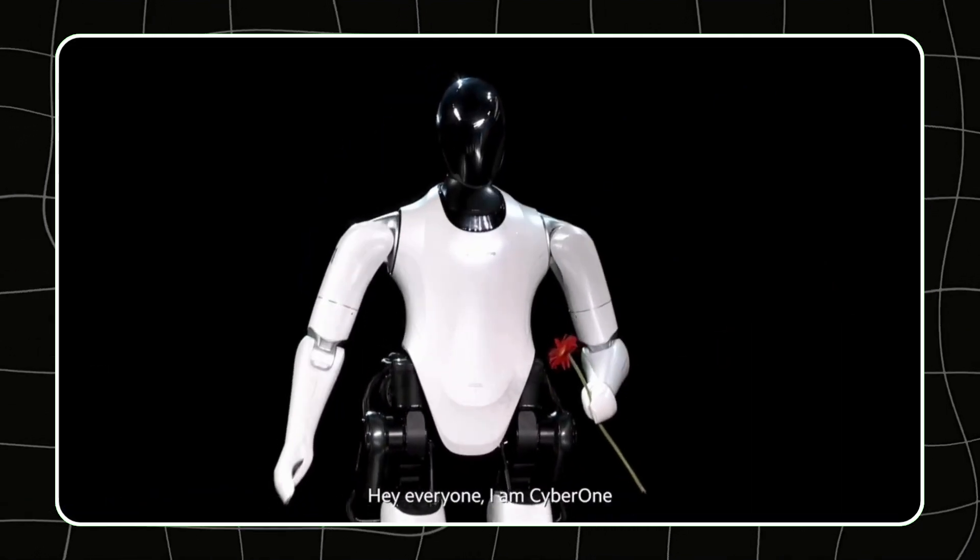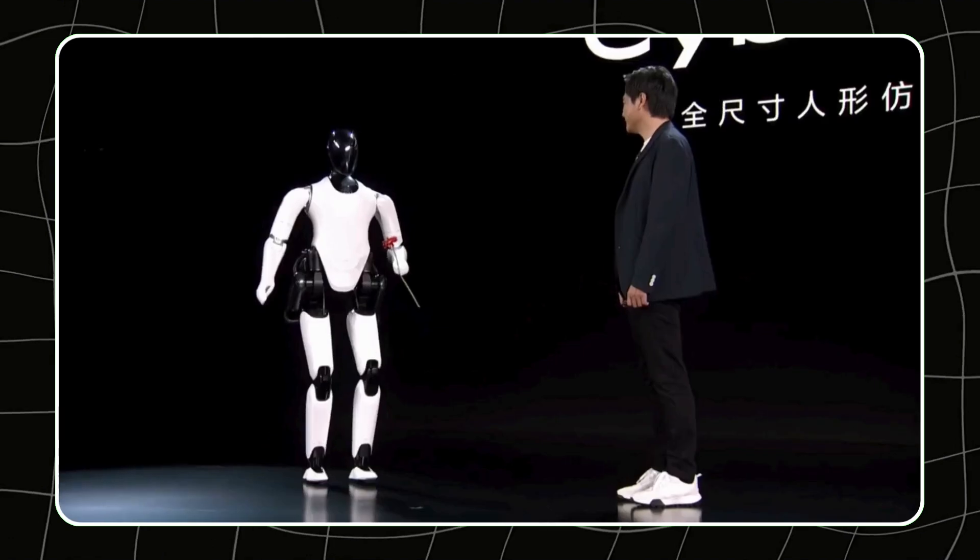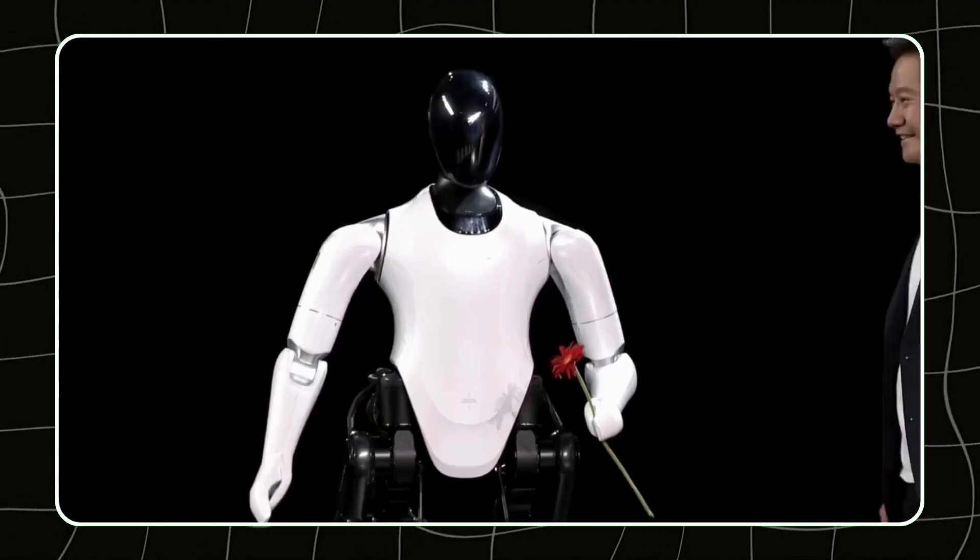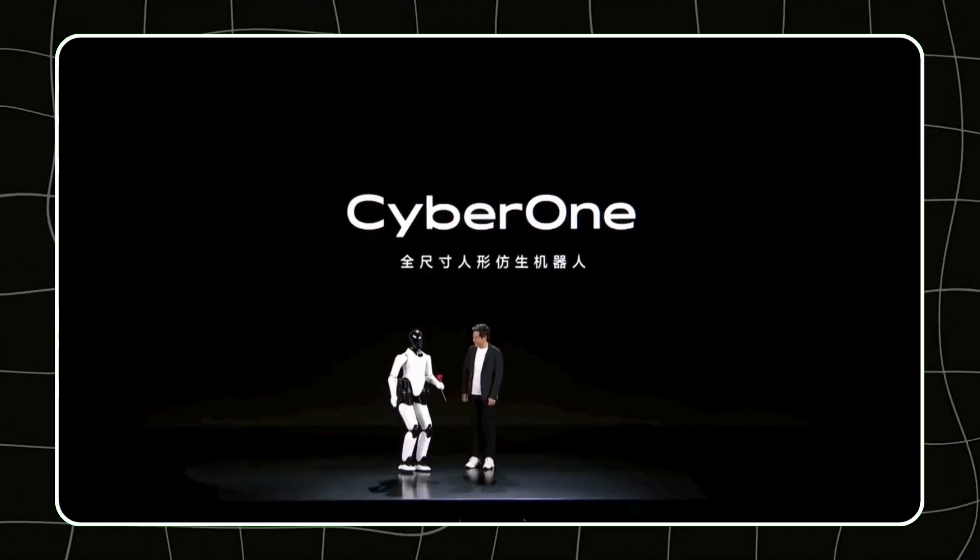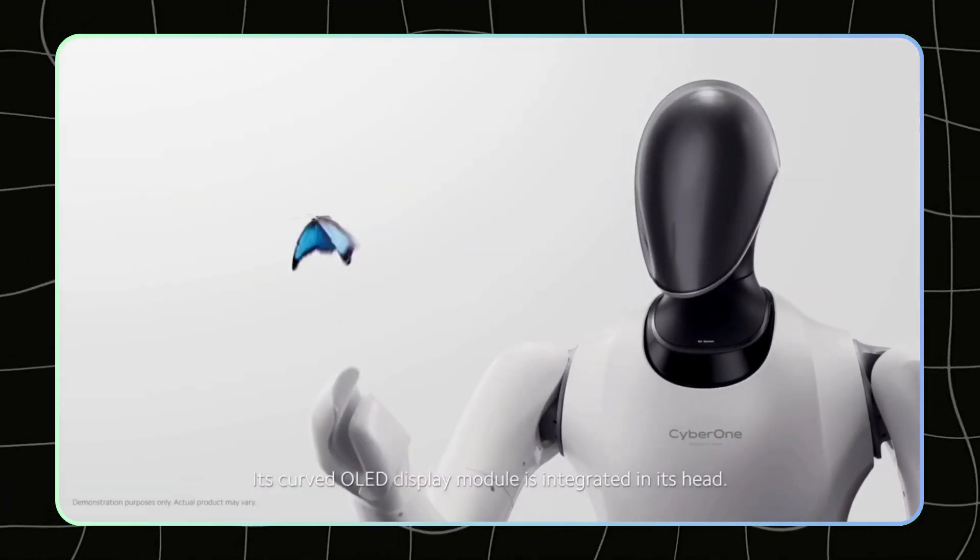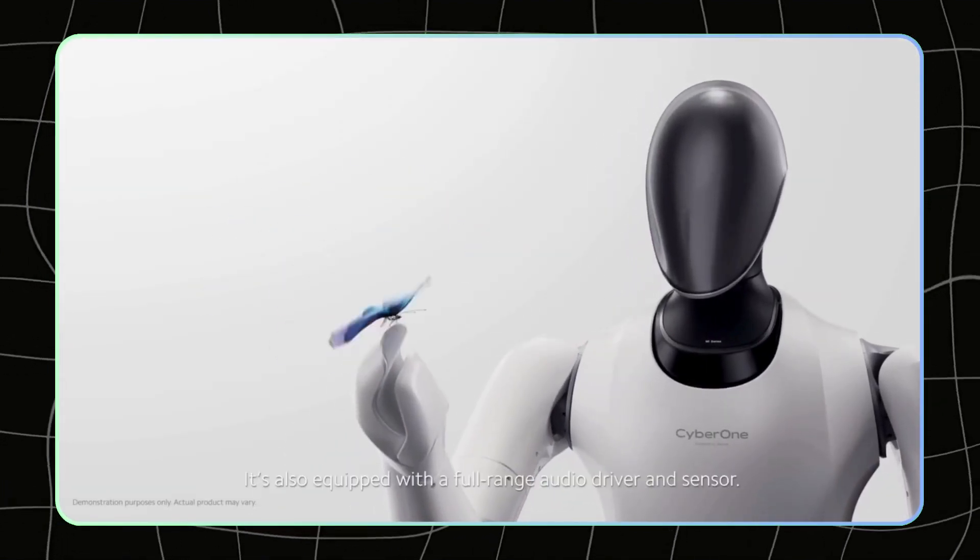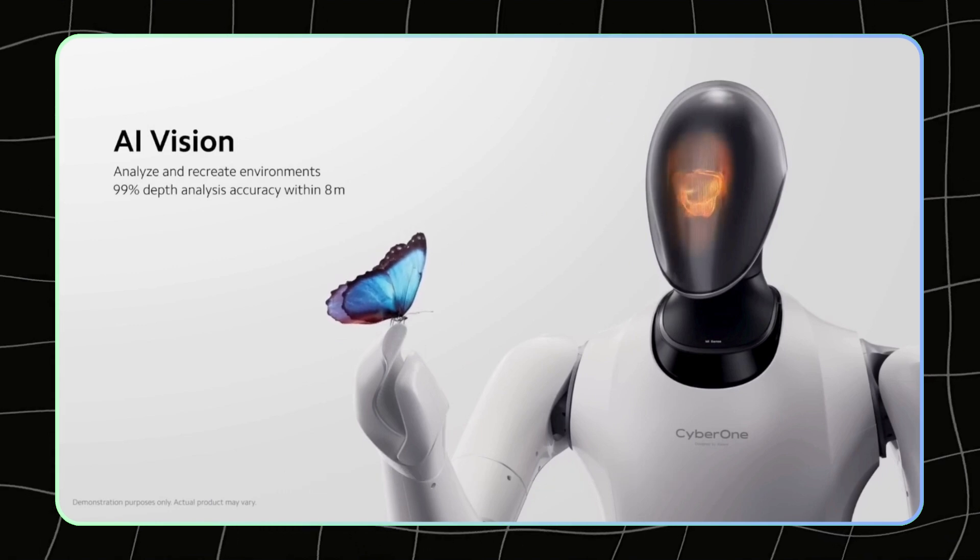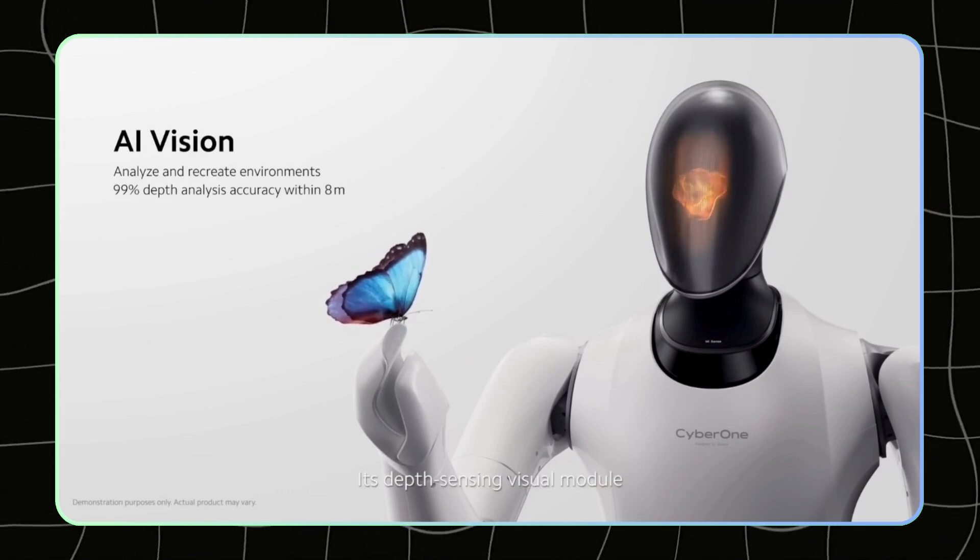Cyber One is equipped with advanced sensors for navigation and object recognition, making it adept at moving through various environments. Whether it's providing companionship or assisting in service roles, Cyber One brings a touch of humanity to robotics, making it a potential friend and helper in our daily lives.